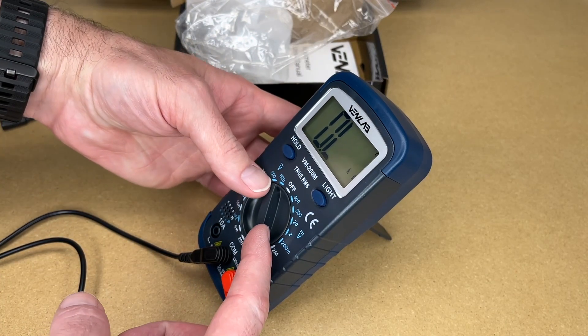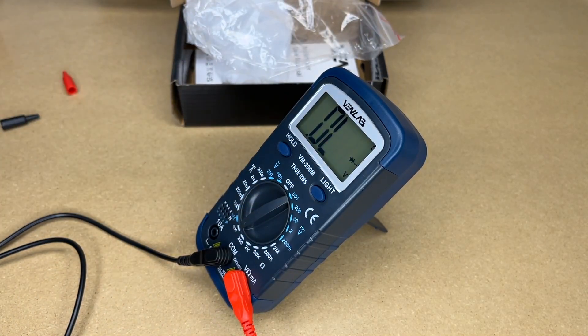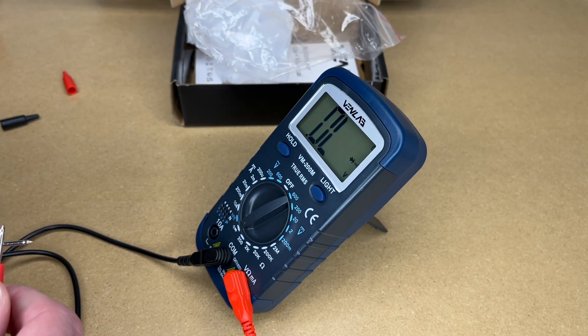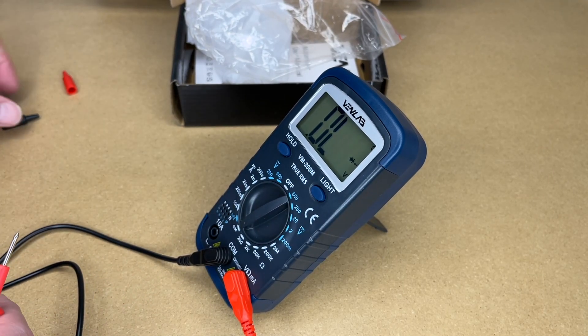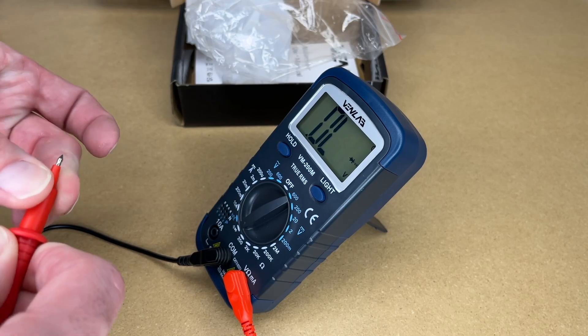Probably one of my most used features on a meter is continuity. This will also do diode testing. But if we touch the probes here, it tests continuity. And of course, I can put the little protectors back on.